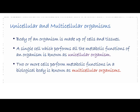What are unicellular and multicellular organisms? The body of an organism is made up of cells and tissues. A single cell which performs all the metabolic functions of an organism is known as a unicellular organism. When more cells perform metabolic functions in the biological body, it is known as a multicellular organism.